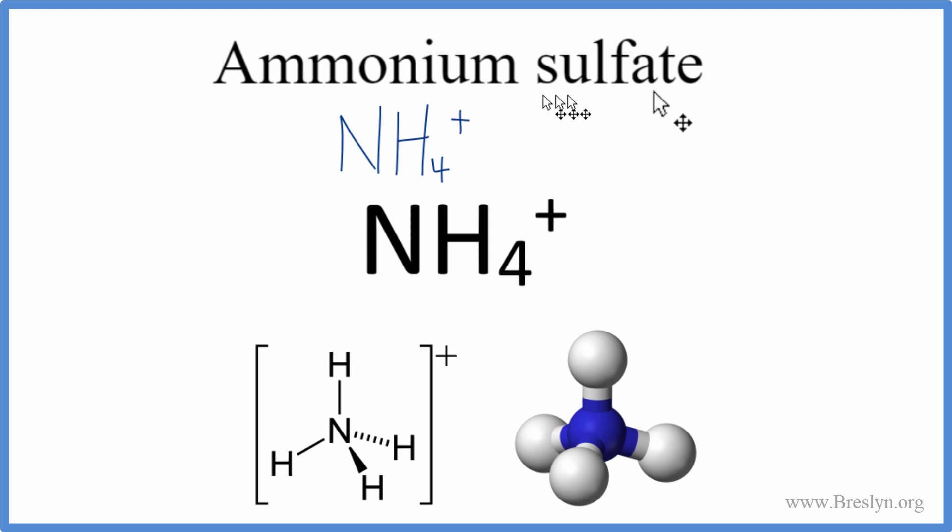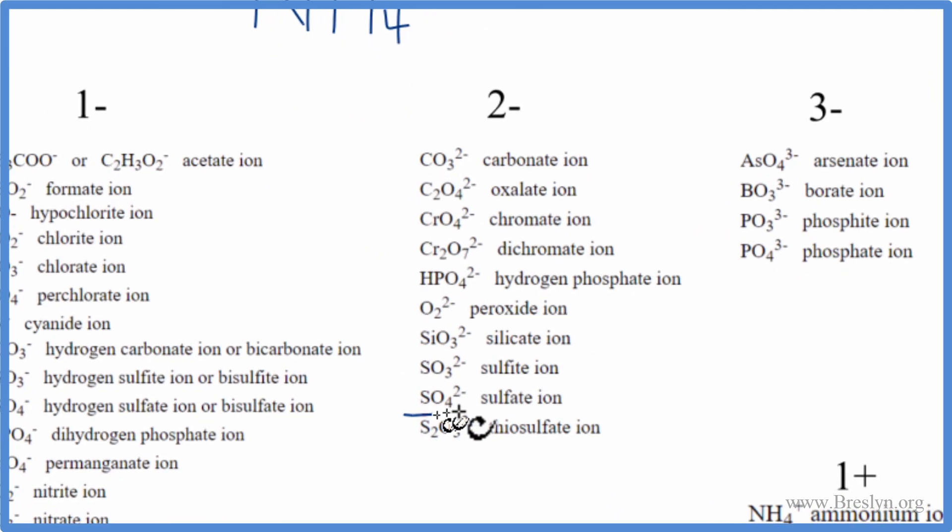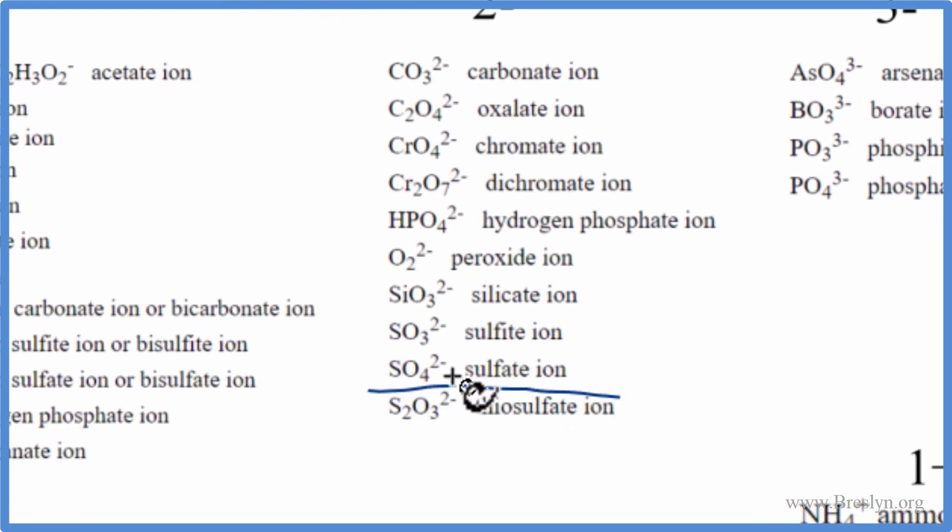It's bonded to a sulfate ion. Sulfate's another thing you won't find on the periodic table. If you see ATE, it's not going to be on the periodic table. So let's look that up. Sulfate is right here. The sulfate ion is SO4 2-.